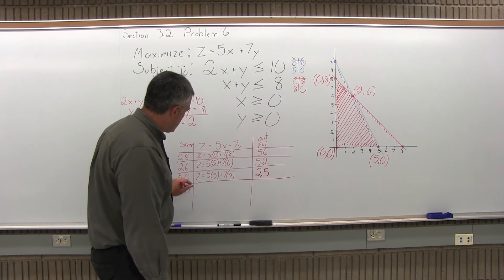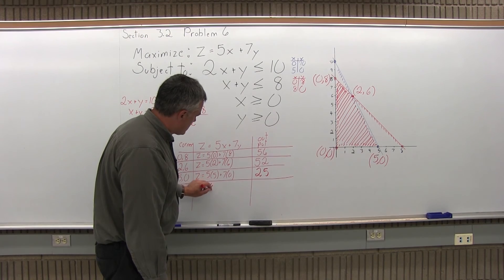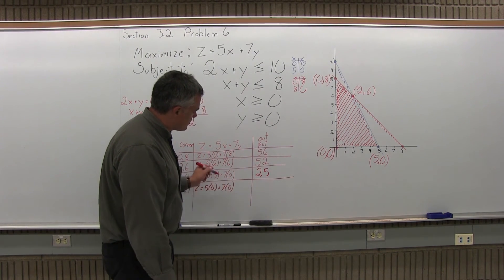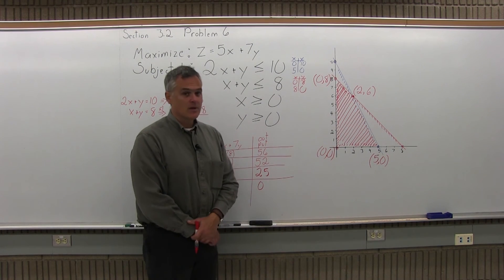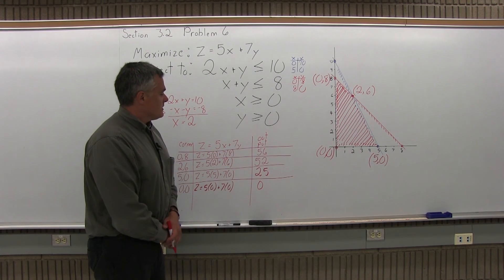And finally, the 0, 0, the last corner point is going to give you an output of 0. You're going to get 5 times x becomes 5 times 0. 7 times y is 7 times 0, which winds up giving you 0 plus 0, which is 0. So that's step 3. Fill in the chart. There's the chart. We filled it in.